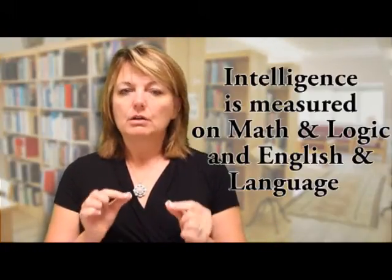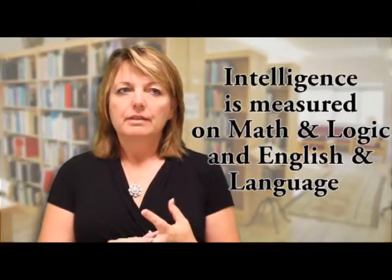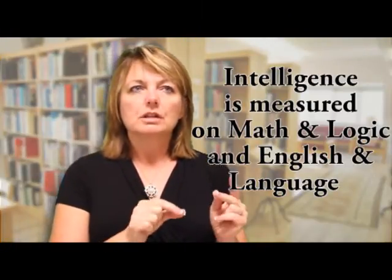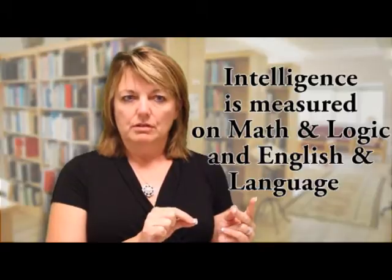When we look at children's intelligence, it is measured on two measures. One is a mathematical, logical measure, and the other is an English language measure. Those two measures — math and English — only measure certain types of learners. If you think about learning, you can be smart in lots of different ways.